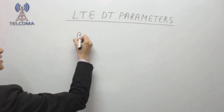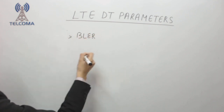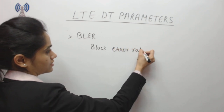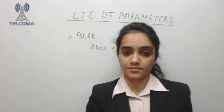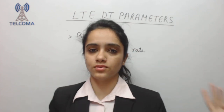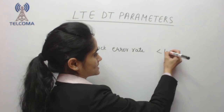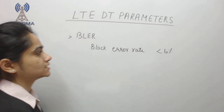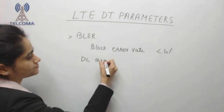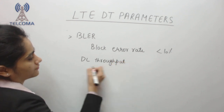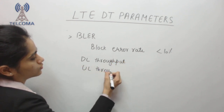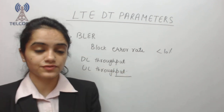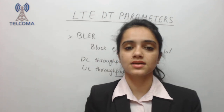Next we have BLER — Block Error Rate — which is the total number of error blocks out of the total number of transmitted blocks. BLER should be less than 10%. Beyond this, we also have downlink throughput and uplink throughput as LTE drive test parameters that we record when performing a drive test. Thank you so much.